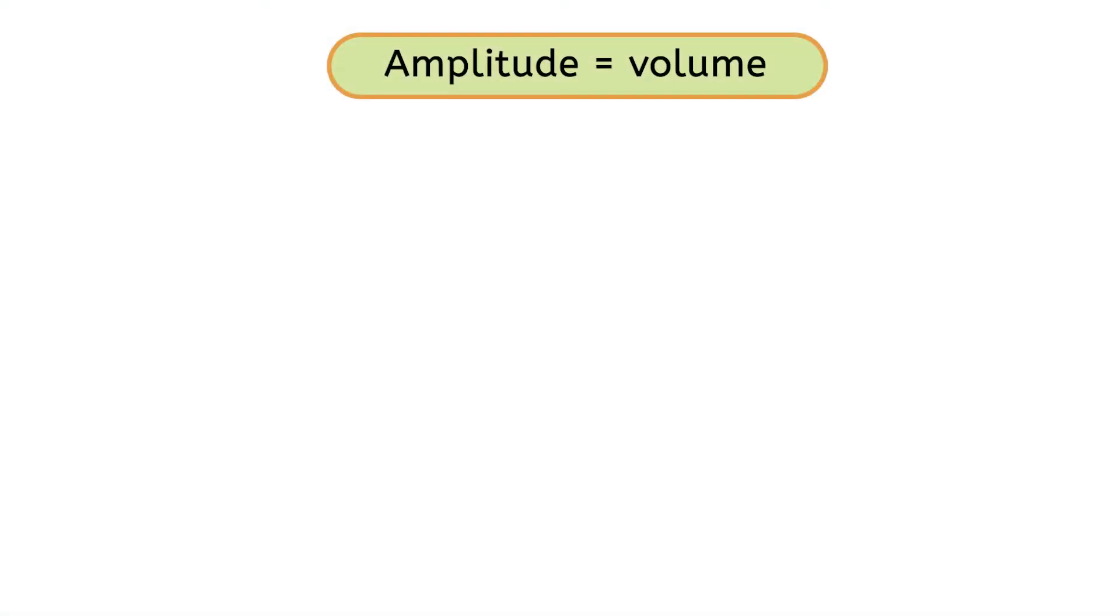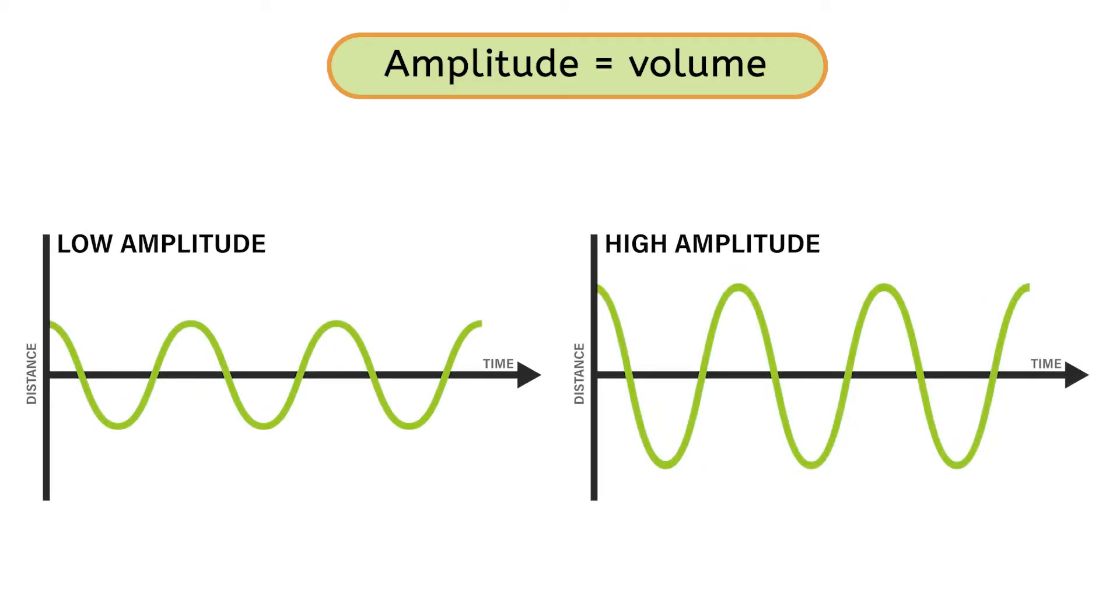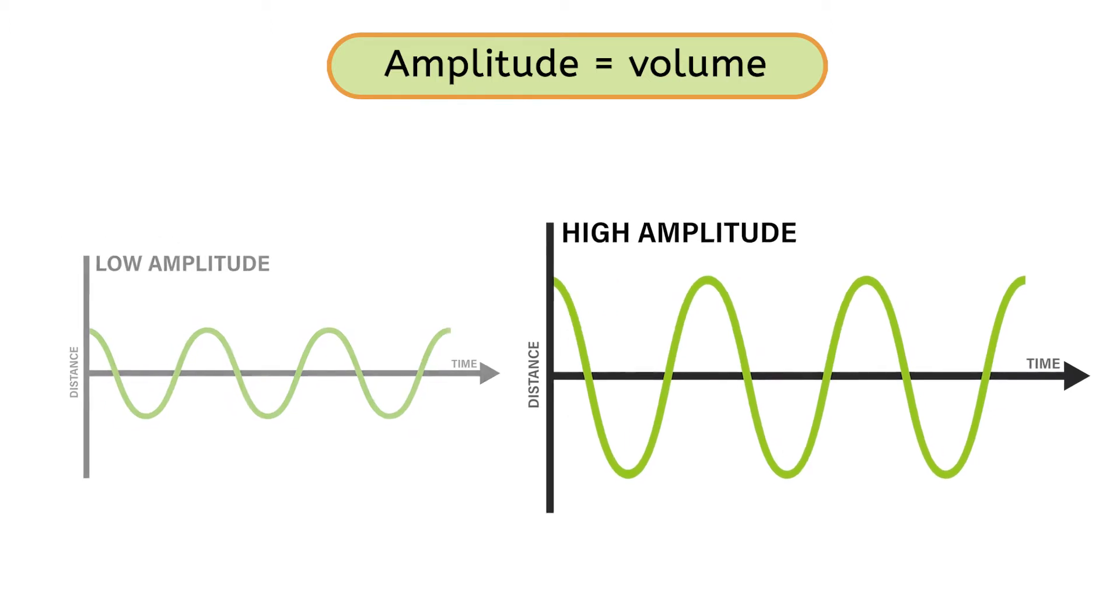So, the amplitude of a wave tells us how loud or quiet the volume of the sound is. So, which wave is showing a louder sound? Right. The matter is moving farther from its starting point in this wave, showing us that this is the louder sound.